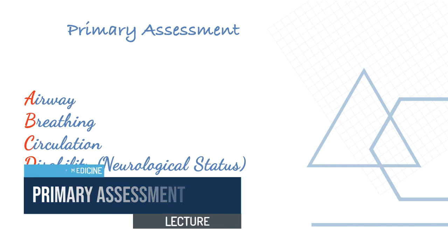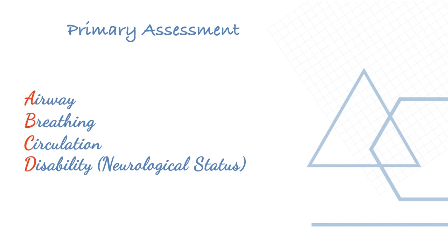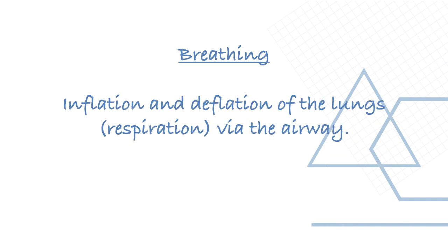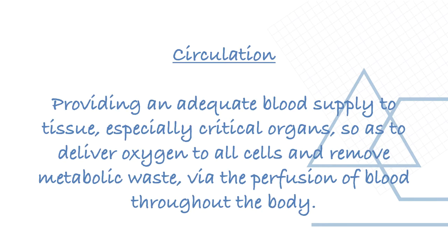A is for airway — the protection and maintenance of a clear passageway for gases, principally oxygen and carbon dioxide, to pass between the lungs and the atmosphere. B is for breathing — inflation and deflation of the lungs while the airway is open. C is for circulation — providing an adequate blood supply to the tissues, especially the critical organs, to deliver oxygen to all cells and remove metabolic waste. D is for disability, meaning neurological status.